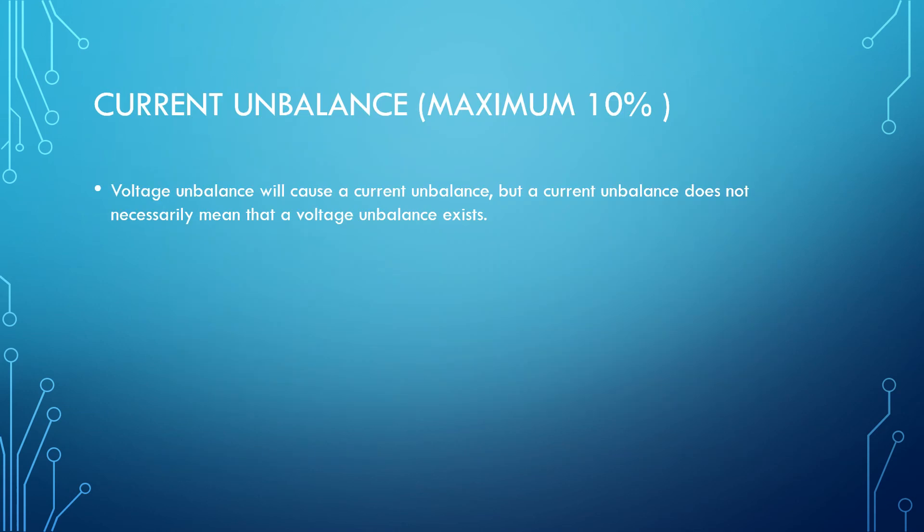Current unbalance is allowed to a maximum of 10%. Voltage unbalance will cause a current unbalance, but a current unbalance does not necessarily mean that a voltage unbalance exists.